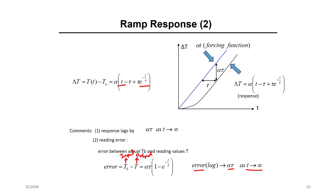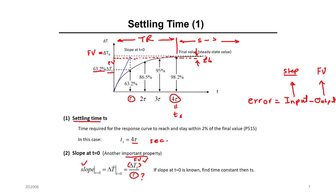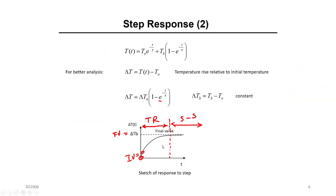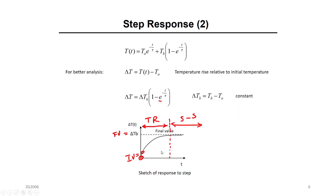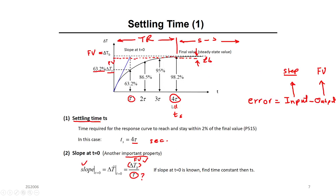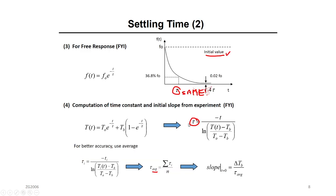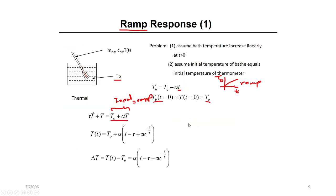This is a quick review of ramp response. Most of the problems you will see in this chapter are of the step input type with a first-order system. You need to know how to draw the transient response showing all the details: tau, settling time. We're going to do this in the next video.